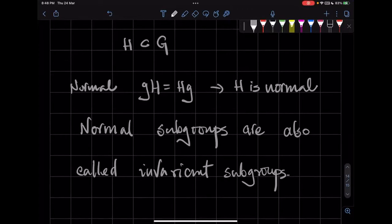So a simple Lie group is a non-abelian Lie group which does not have a non-trivial normal subgroup.